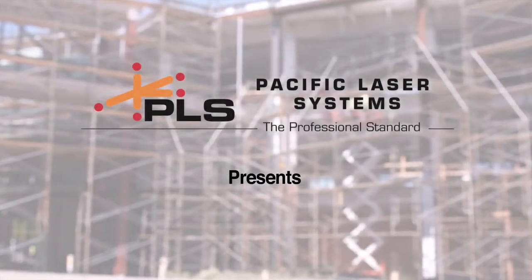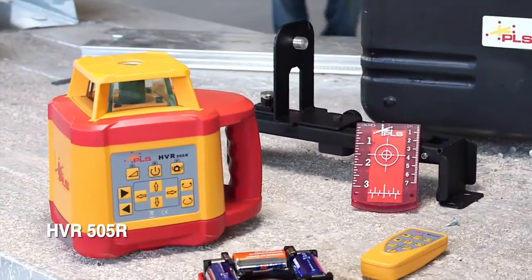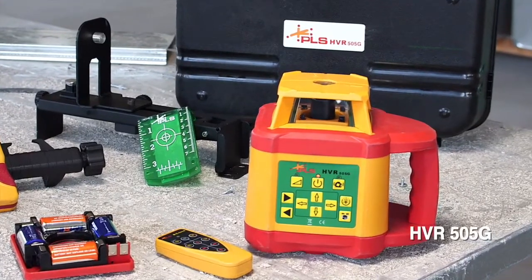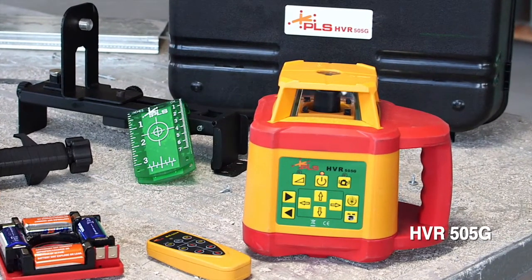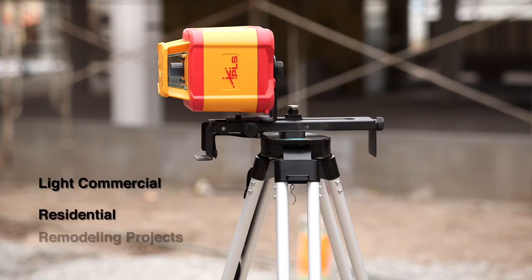PLS Pacific Laser Systems presents the HVR 505R and HVR 505 Green Rotary Lasers. The HVR 505 is a compact mid-range rotary laser designed for light commercial, residential, and remodeling projects.